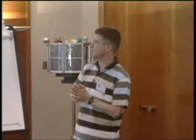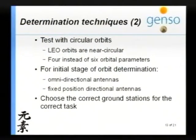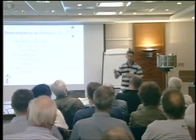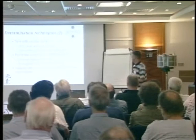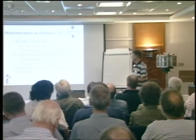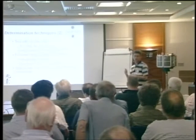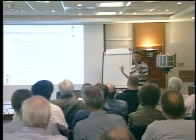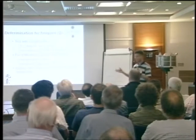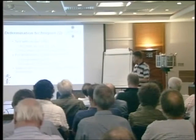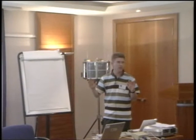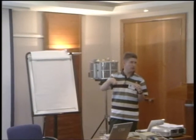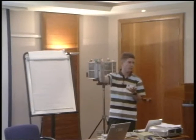One idea is to test with circular orbits, because LEO orbits are near circular, and you then have four instead of six orbital elements to determine — you don't have the eccentricity and the argument of perigee. So you can focus on four initially, and then go to five and six. For the initial stages, maybe it's nice to use omnidirectional antennas with preamps, or put your antenna in a fixed position in some direction. You wait until it comes over, and slowly move to the orbit. It's really important to choose the correct ground station for the correct task — for inclination information, there's no use choosing all stations on the equator.